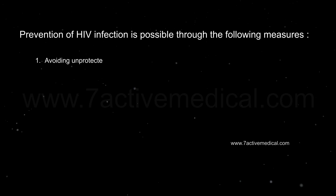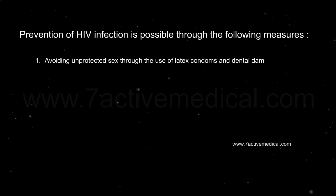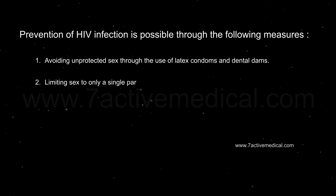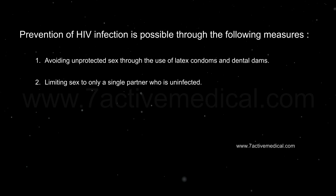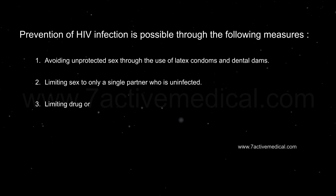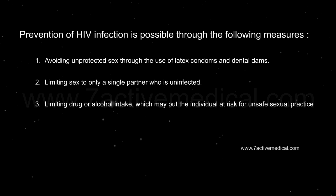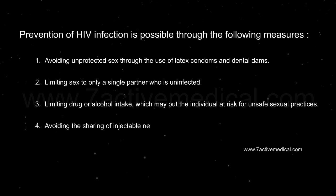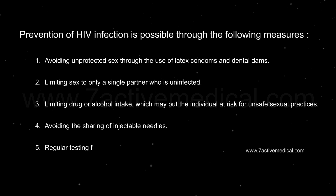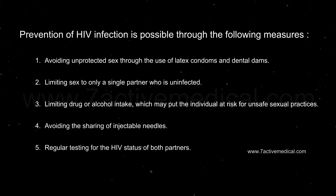Prevention of HIV infection is possible through the following measures: avoiding unprotected sex through the use of latex condoms and dental dams; limiting sex to only a single partner who is uninfected; limiting drug or alcohol intake which may put the individual at risk for unsafe sexual practices; avoiding the sharing of injectable needles; and regular testing for the HIV status of both partners.